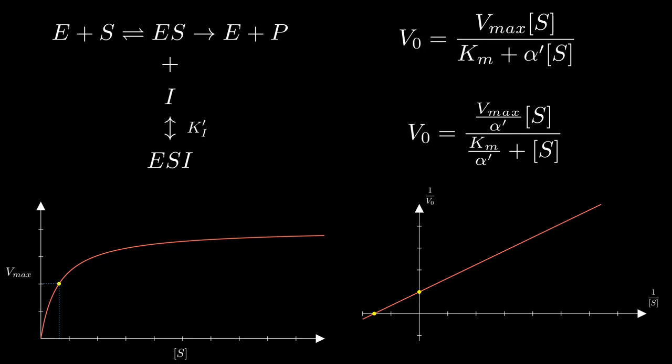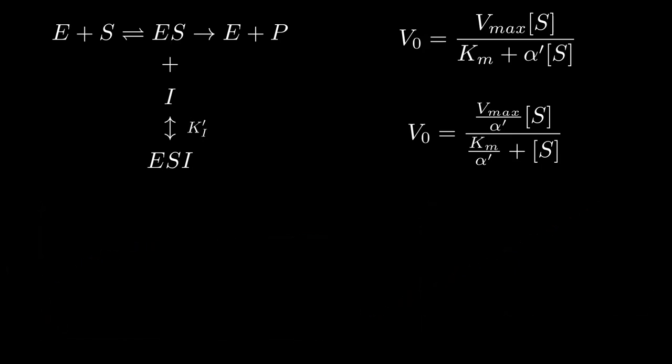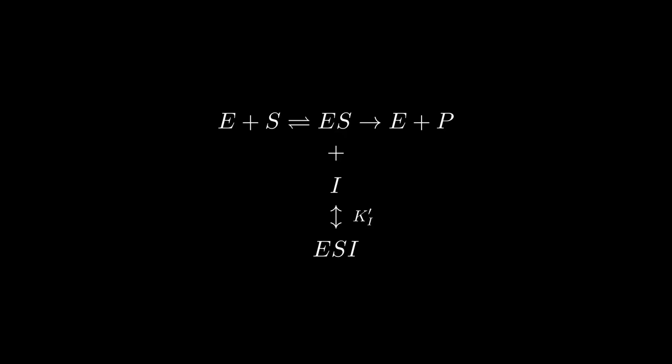The decrease in apparent Km can be explained qualitatively by Le Chatelier's principle. As the inhibitor binds to the ES complex, it pushes the reaction E plus S to ES forward, promoting ES formation. Since ES formation is promoted compared to breakdown, the apparent Km decreases. Unlike competitive inhibition, uncompetitive inhibition actually decreases Vmax, because the inhibitor binds to the ES complex rather than the enzyme active site. This difference in binding sites makes it impossible for substrates to outcompete inhibitors. The only factors that can influence Vmax are the concentration of the inhibitor and its association constant with the ES complex.